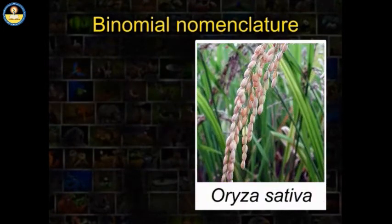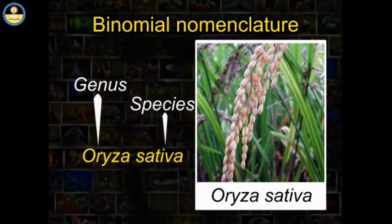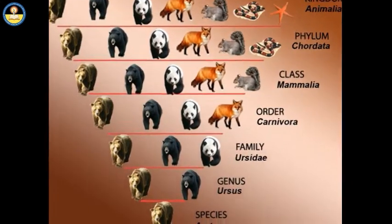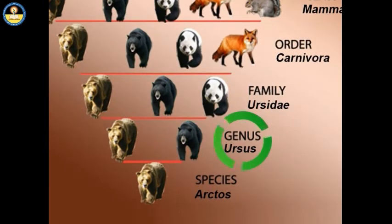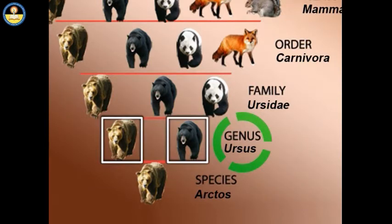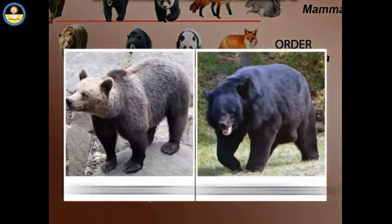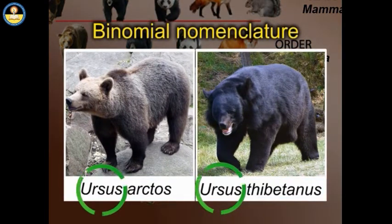In the scientific name of rice, Oryza sativa, Oryza is the genus whereas sativa is the species. In binomial nomenclature, the first name is the genus of the organism and the second is its species. As one genus usually has more than one species in it, while naming different organisms of the same genus, the species changes but the genus remains the same.